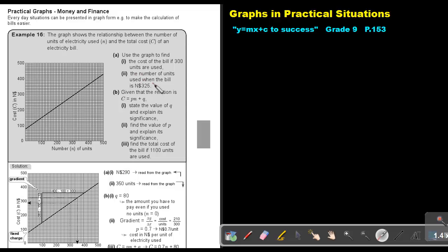The number of units used when the bill is 325. Now I go to the cost. So there is 300, 310, 320. 325 will be exactly in the middle there. And then as soon as you touch, I just go straight down. And it looks like exactly in the middle between 300 and 400, so that will be 350 units.